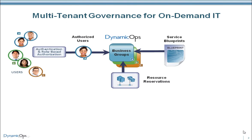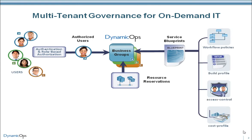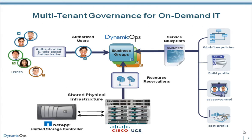In our demo example, an authorized user for Business Group A, Mary, will select from a Dynamic Ops Service Catalog that contains a list of approved virtual and physical machine blueprints. The blueprints contain the specifications for how the machines will be built and managed throughout their life. Machines will be provisioned using storage, network, and server resources reserved for Mary's group.